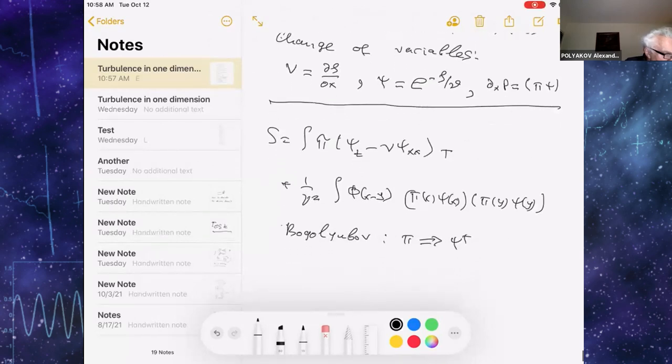It gives some Ward identities in functional integral and so on. And by this change of variables, you reduce the action to the action of complexified Bose gas, one-dimensional Bose gas, which is completely integrable system.